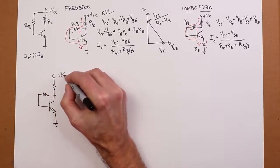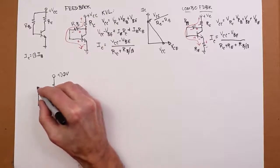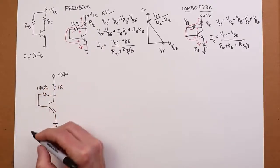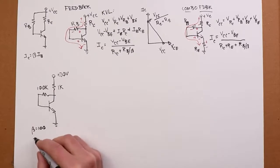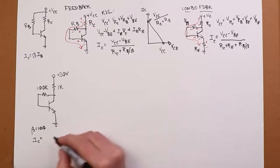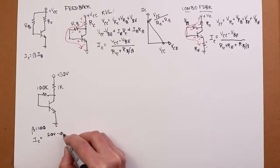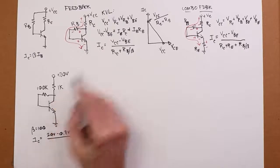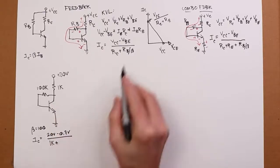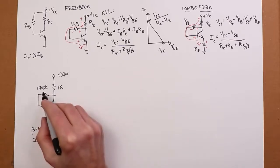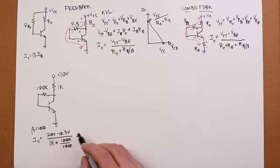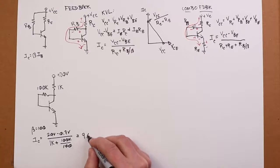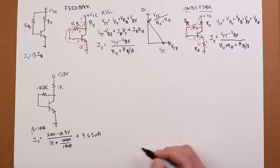Okay, I'm going to put a 20 volt supply on here, 1K resistor, 100K over here. I'm going to assume initially beta is 100. Okay, so our collector current, using our formula, is going to be 20 minus the 0.7 on VBE divided by RC, that's 1K, plus the RB over beta, 100K divided by 100. All right, so that's going to be 19.3 volts divided by 2K. That's going to get us 9.65 mils.